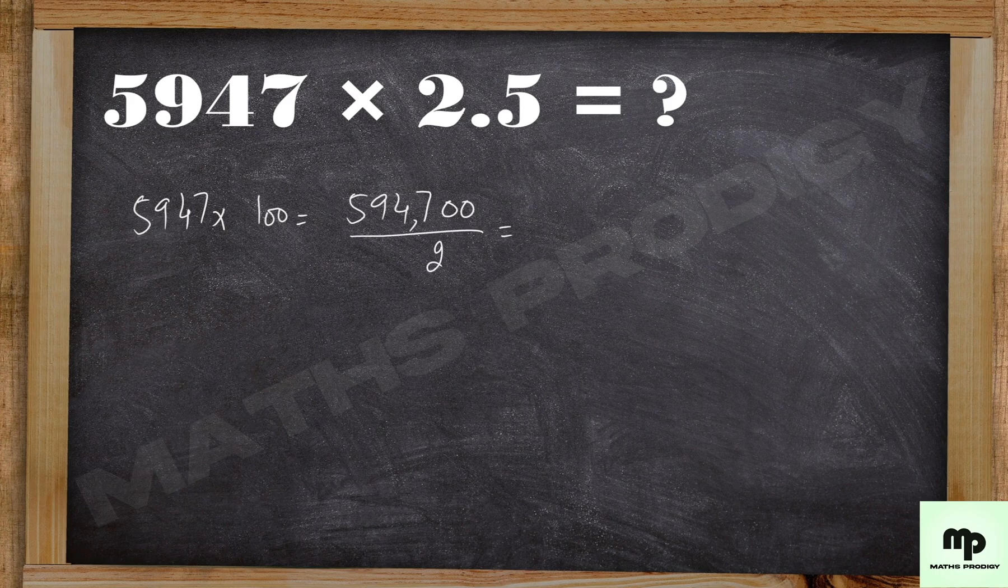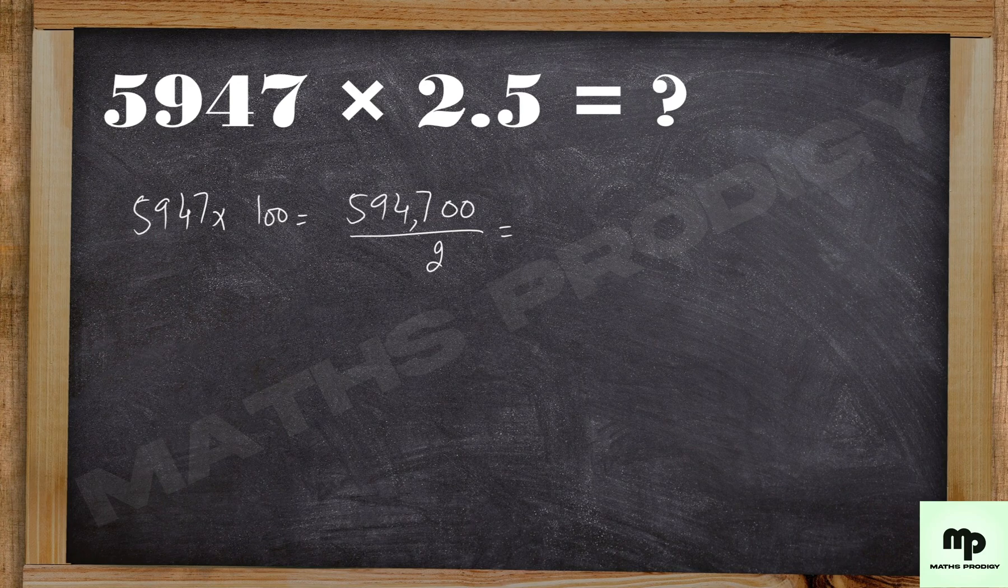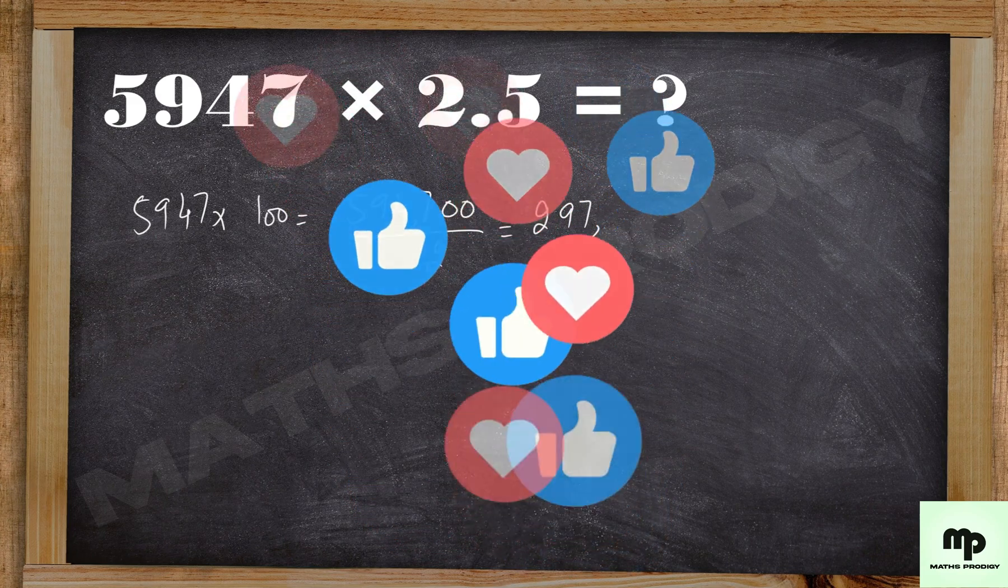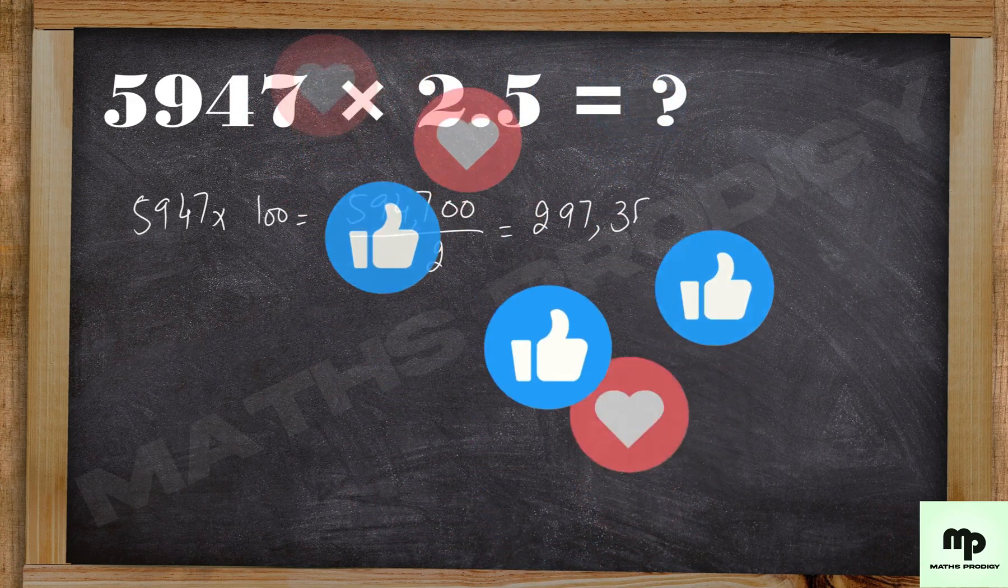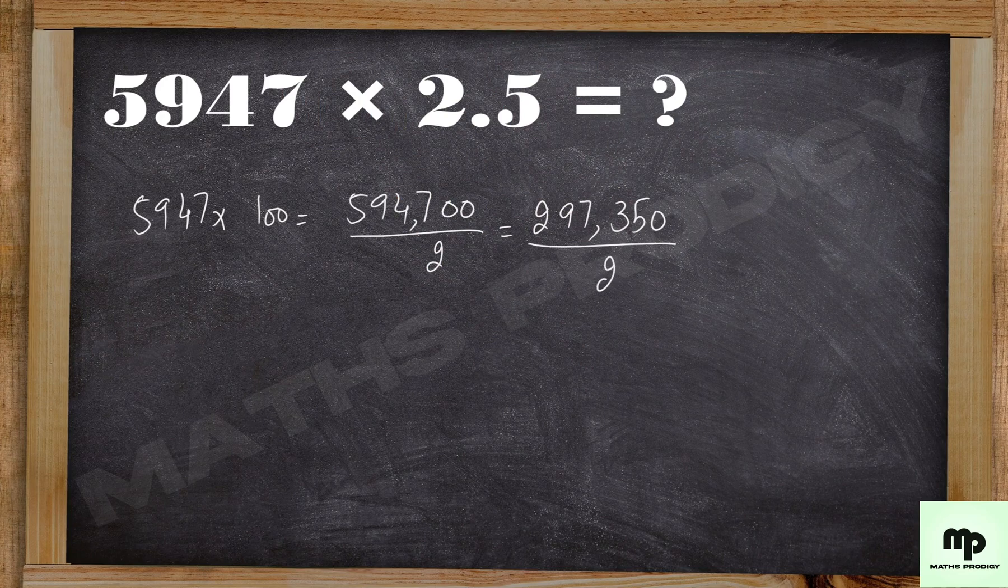Make it half. There's a trick for it. 594, you know if you have this number, that will be 297. And for 700, it is 350. Half it again.